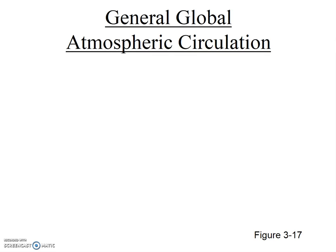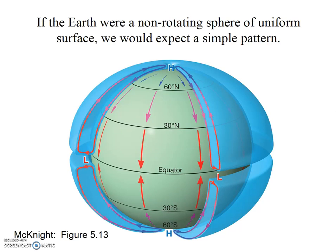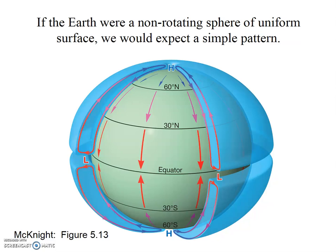We now have an understanding of cyclones and anticyclones. Let's use that knowledge to better understand the global pressure and wind system. If the earth were a non-rotating sphere of uniform surface, we'd expect a very simple pattern: cold polar regions would be high pressure, warm equatorial regions would be low pressure, and winds would flow from high to low pressure. Of course, this is not what happens at all. The earth is rotating and has a much more uneven surface, and there's a lot more complexity to the global wind and pressure system.